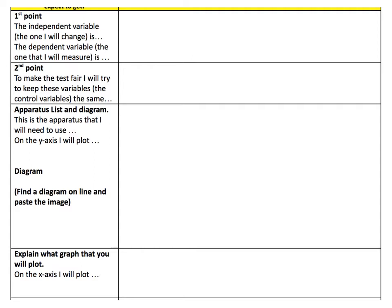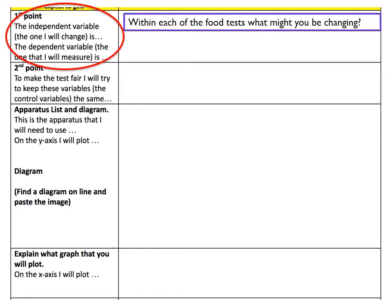On the sheet that you've been given to fill out, the first point to think about is the independent variable. The variables in this investigation are quite tricky to understand because it is a food test and it's not a simple one variable versus another. For the independent variable — the one that you're changing — think about in the food tests what might you be changing.